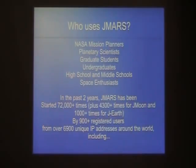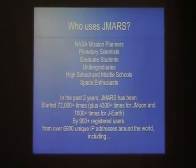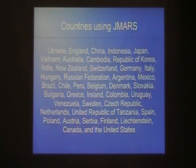A couple of stats: JMRS has been launched around 2,000 times in the last couple of years. We have 900 actual registered users — you don't have to register to use the tool, though there are a few benefits like the ability to share your data set with other users. If you don't want to tell us who you are, you can fire up the tool completely anonymously. Tracking IP addresses, we had almost 7,000 different IP addresses use our tool, from 42 different countries actively using JMRS to do research.